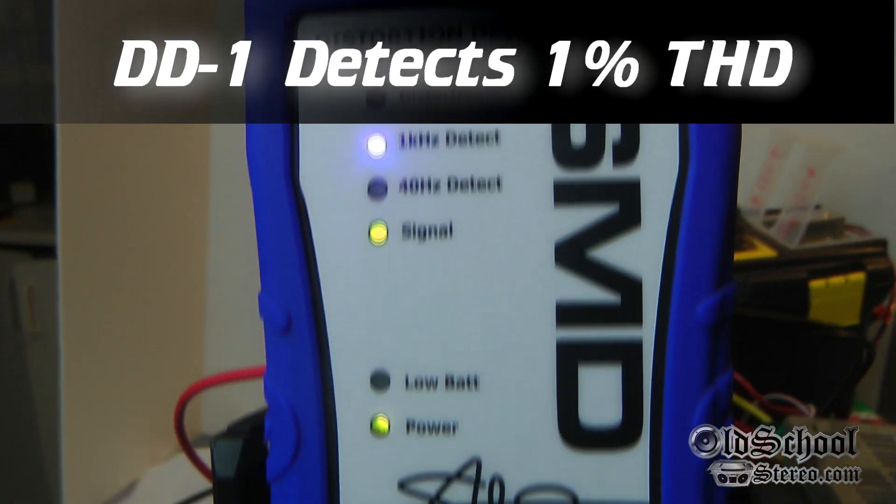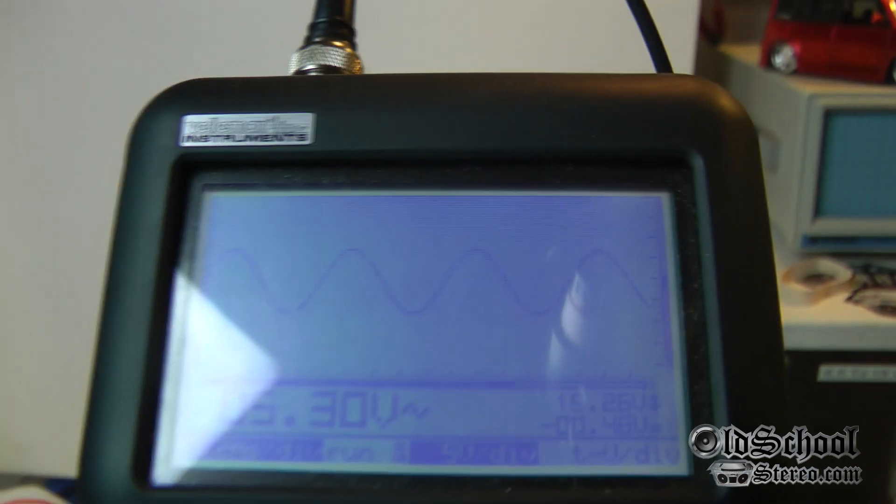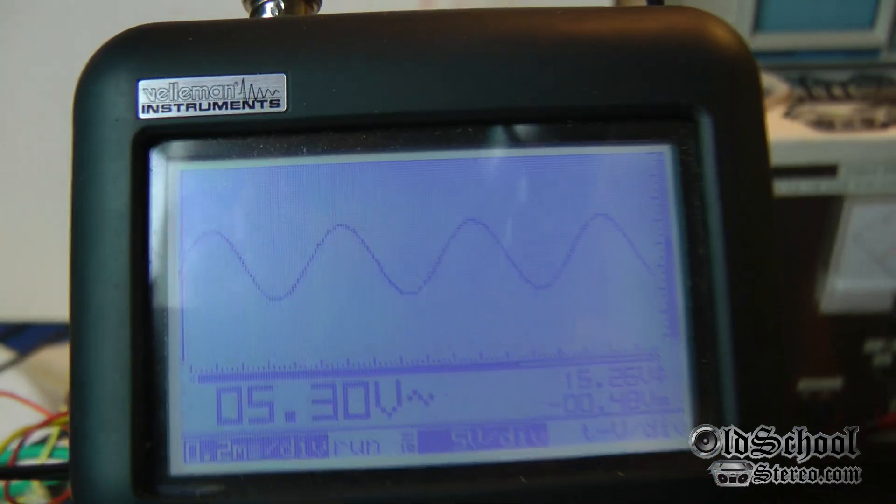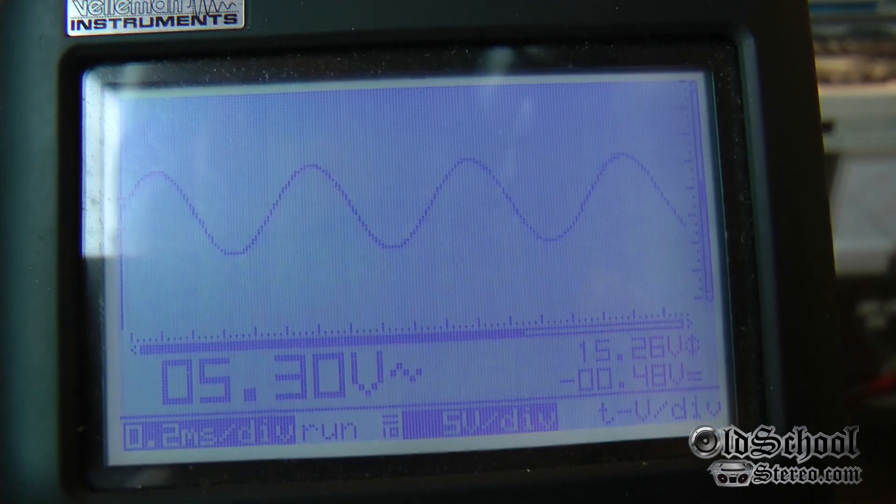Let's see, we have the DD1, it's detected one kilohertz as it should. It does not see distortion. Check out the video scope: clean, five point three volts, no problem with that waveform at all.